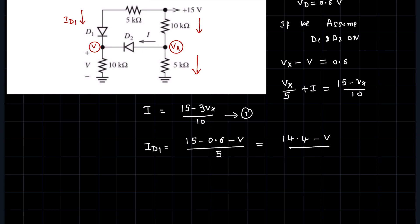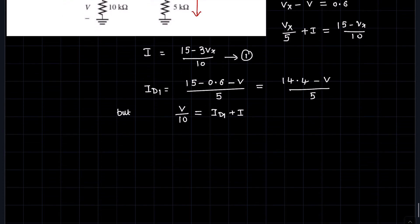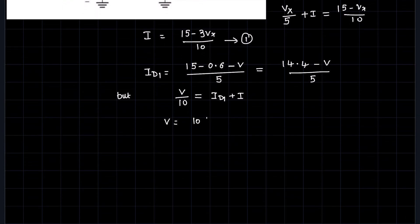Now writing the KCL equation at node V: V over 10, the current flowing through the 10 kilo-ohm resistor, is nothing but id1 plus i, because both currents are approaching the node V. So V equals 10 times the quantity i plus id1.